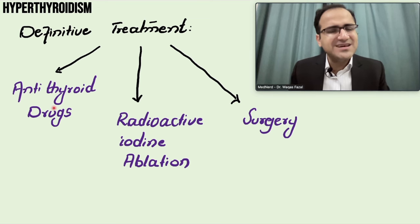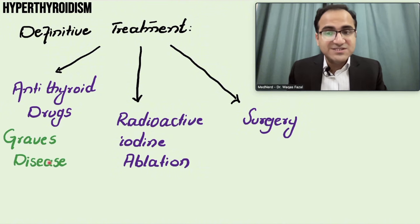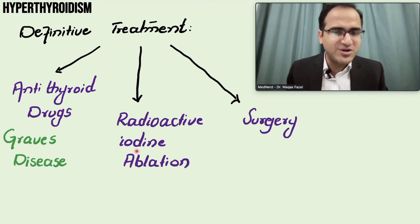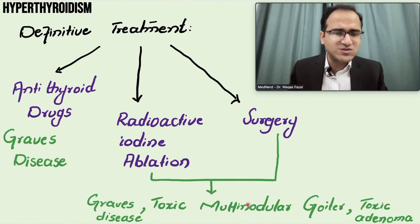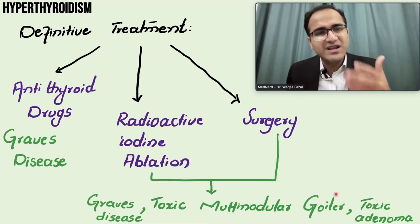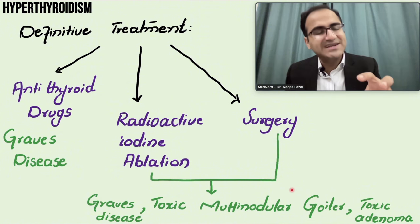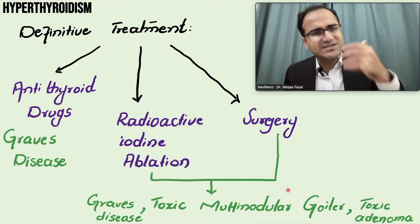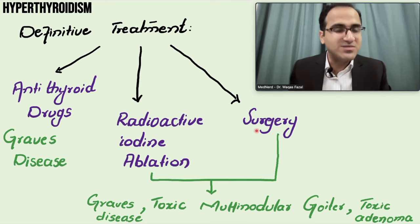Antithyroid drugs are mainly used as the treatment of Graves' disease. If you cannot use antithyroid drugs in a Graves' patient, you can go for radioiodine ablation or surgery. Radioactive iodine ablation and surgery are mainly preferred in patients with toxic multinodular goiter or toxic adenoma, because these conditions do not respond well to antithyroid drugs. However, Graves' disease can also be treated with radioactive iodine ablation or surgery.